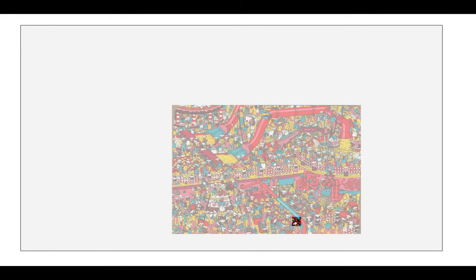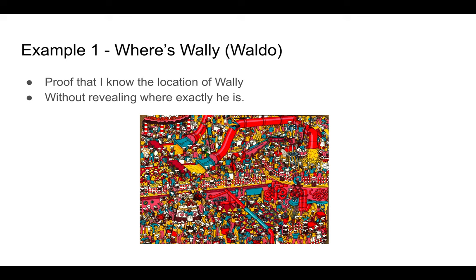Now, if I was to make this paper transparent so that you can see what I've done, you will see that I've shifted the piece of art where Wally is contained somewhere behind the white piece of paper and then cut a little hole. I could have shifted the paper somewhere else and revealed Wally to be over there, and if we make it transparent you can see that the page has been shifted. So essentially what is happening is I keep moving where this page is, cut a little hole, and I'm essentially revealing where Wally is. I've proved that I know the location of Wally without revealing where exactly he is.